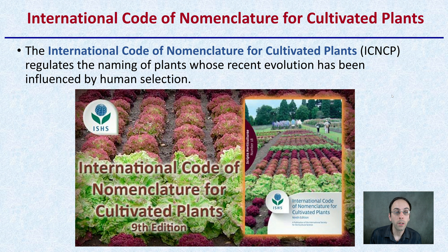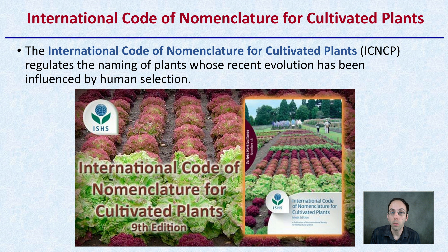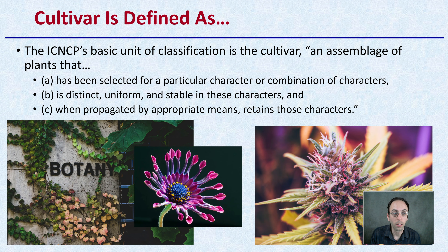First off, there's the International Code of Nomenclature for Cultivated Plants — this is the ICNCP. This regulates the naming of plants whose recent evolution has been influenced by human selection. So of course, this would apply or pertain to cannabis based on that definition.